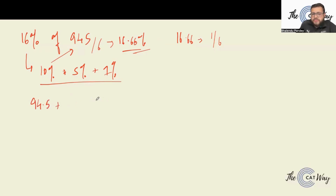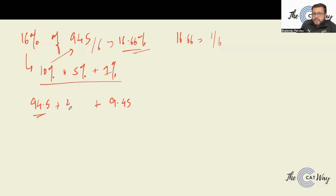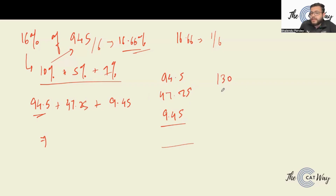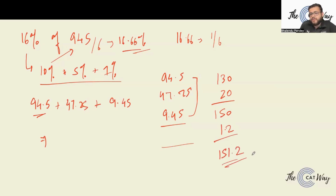1% of 945 is 9.45. For 5%, divide the 10% value by 2: 94.5 divided by 2 gives 47.25. Now add them up: 94.5 + 47.25 + 9.45. Add the tens: 90 + 40 = 130. Then units: 4 + 7 + 9 = 20. That gives 150.